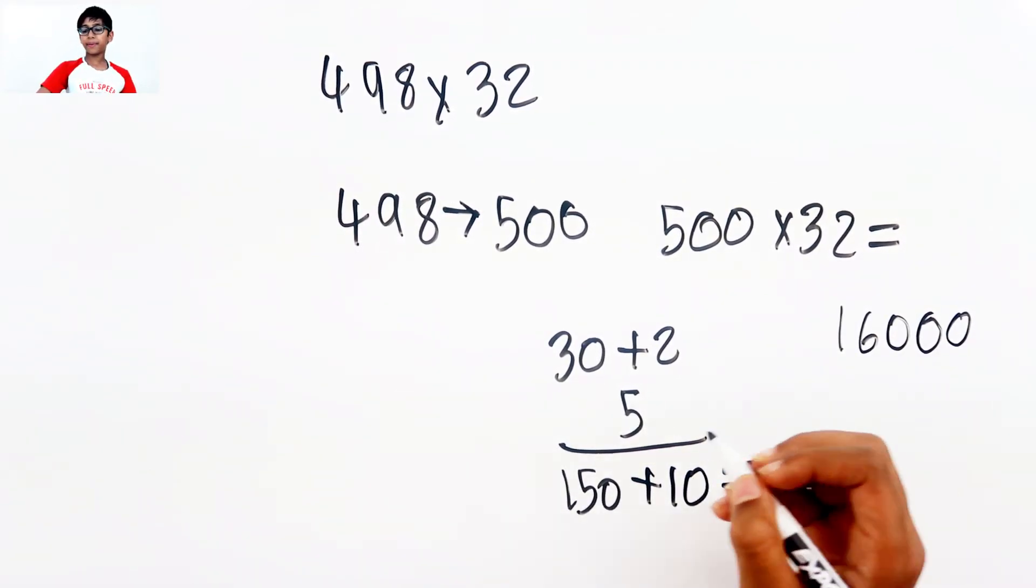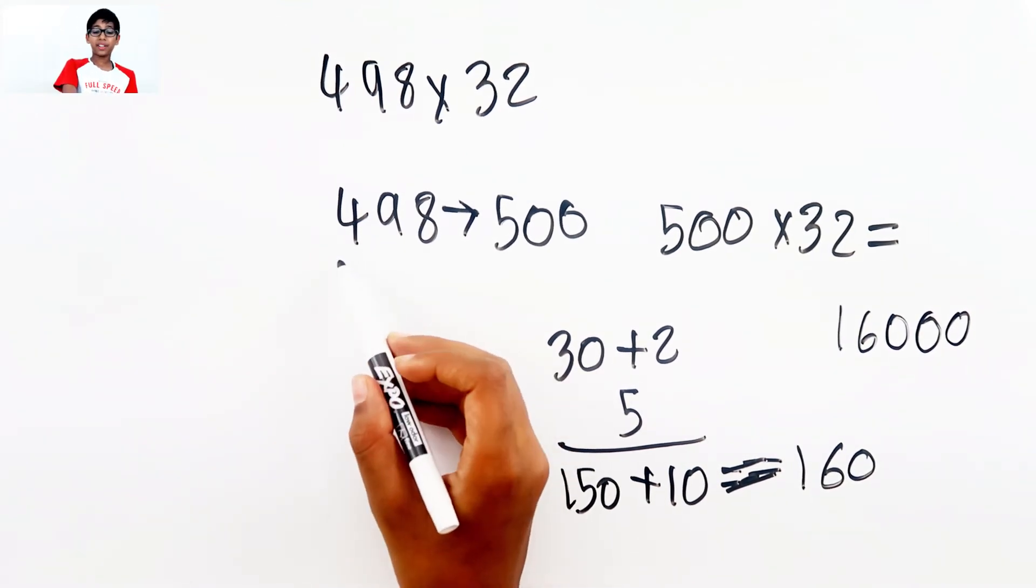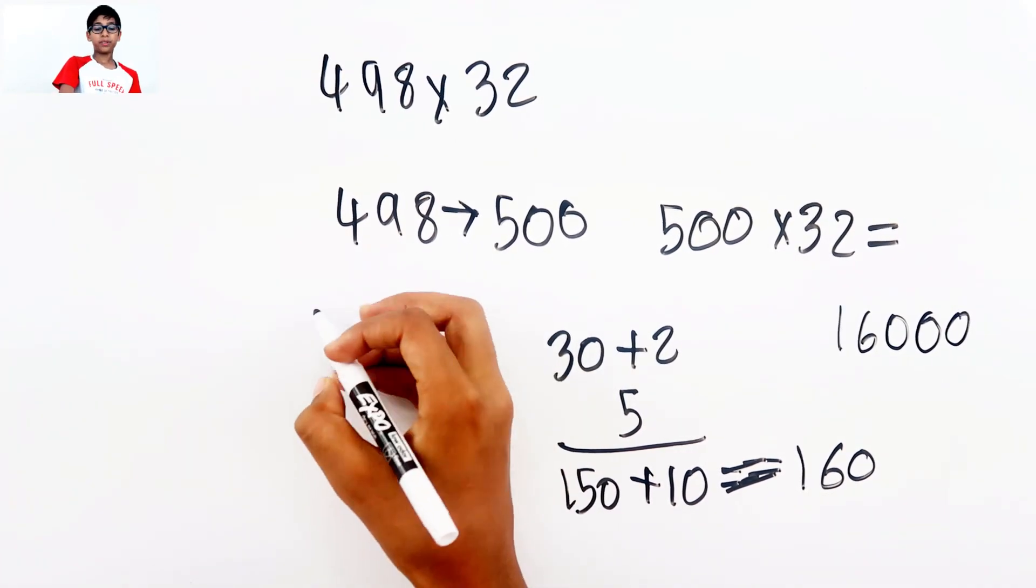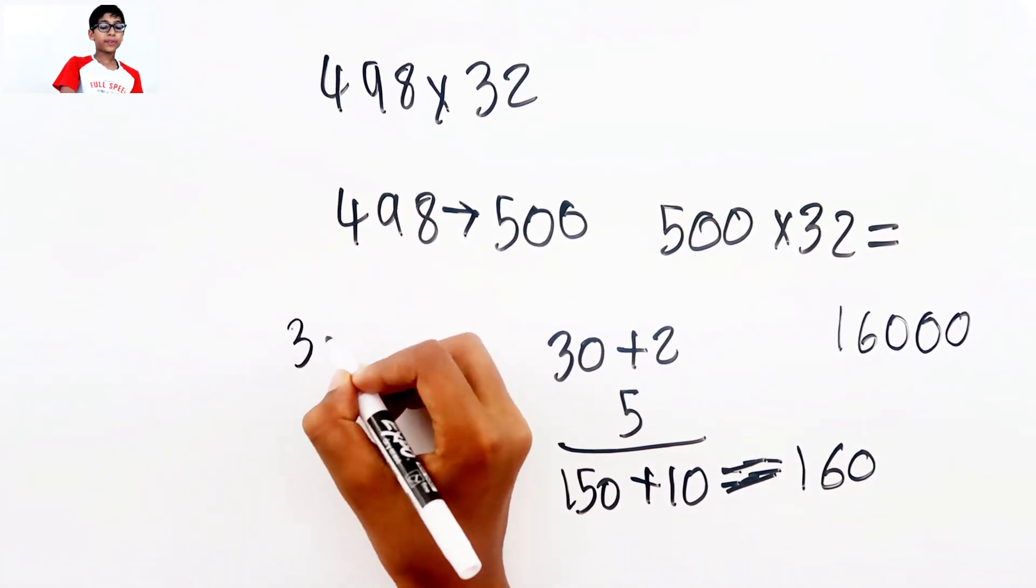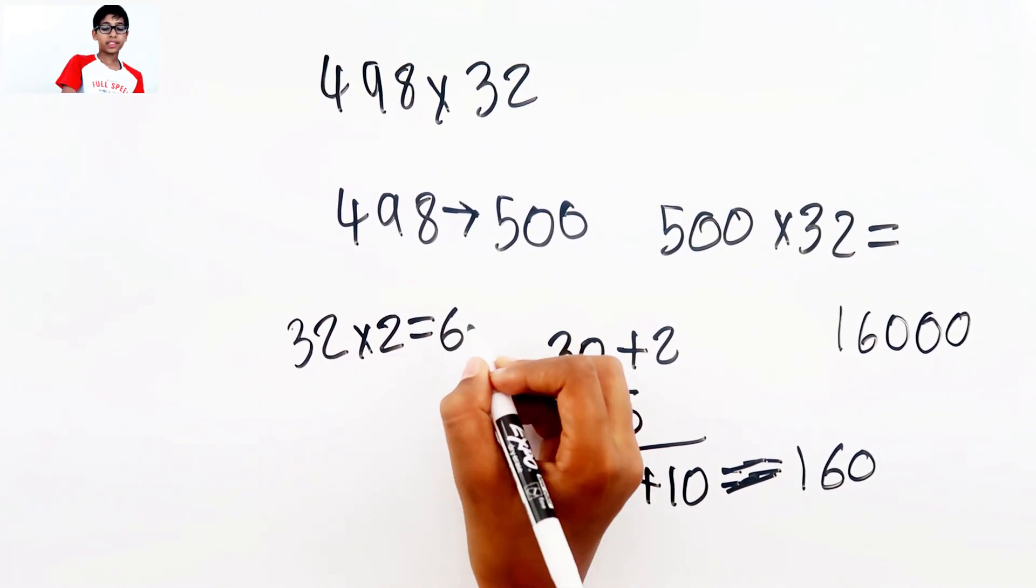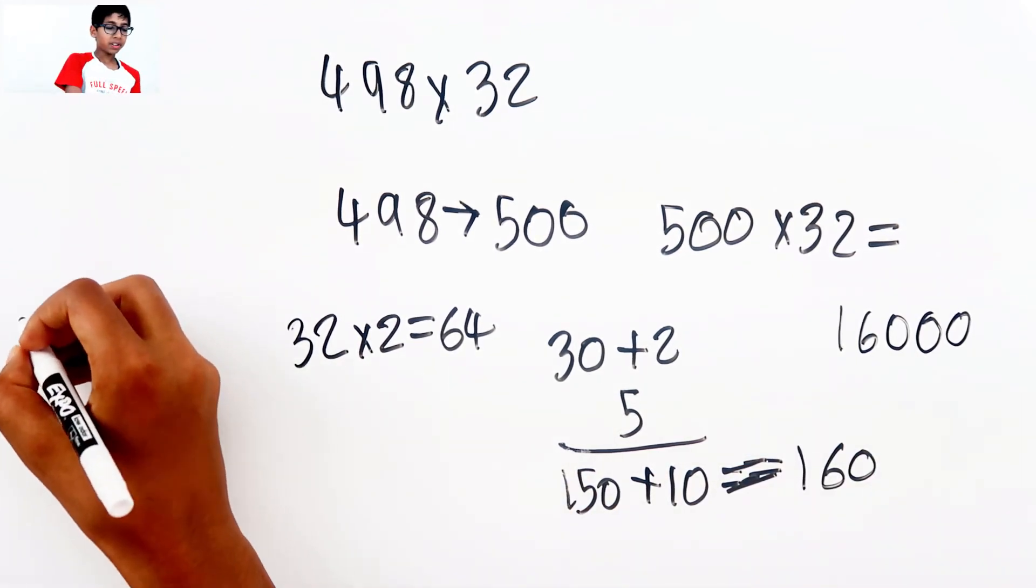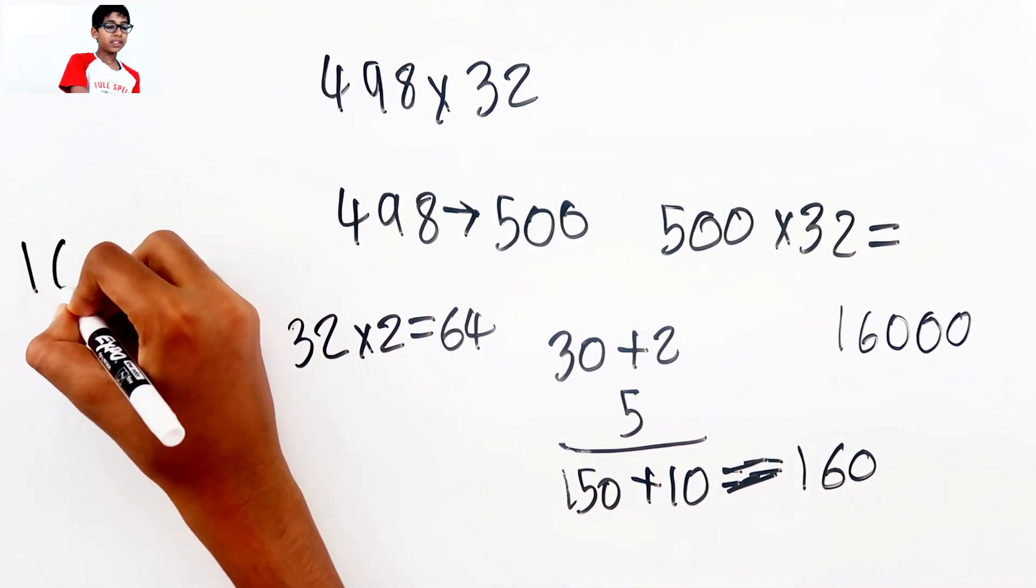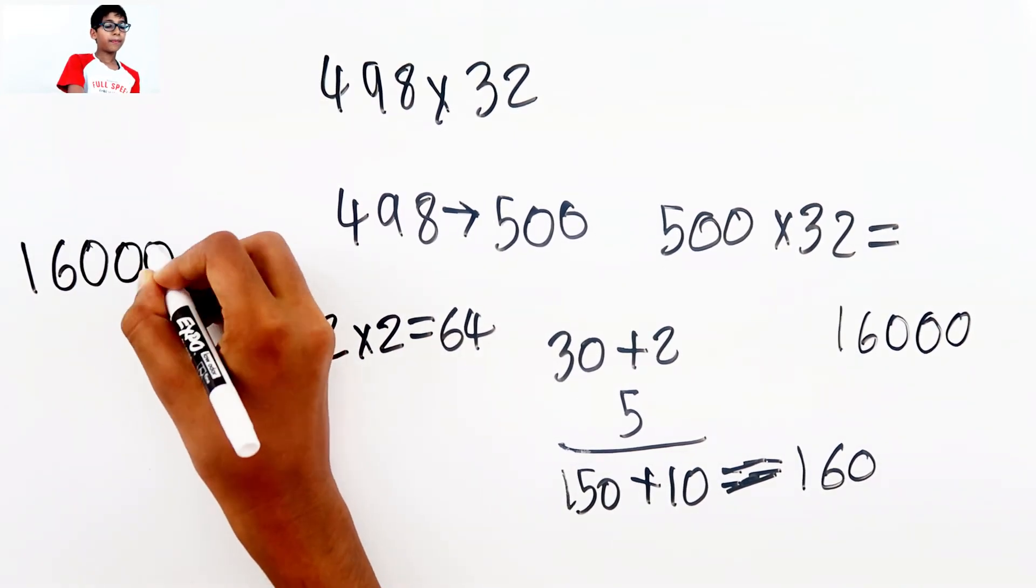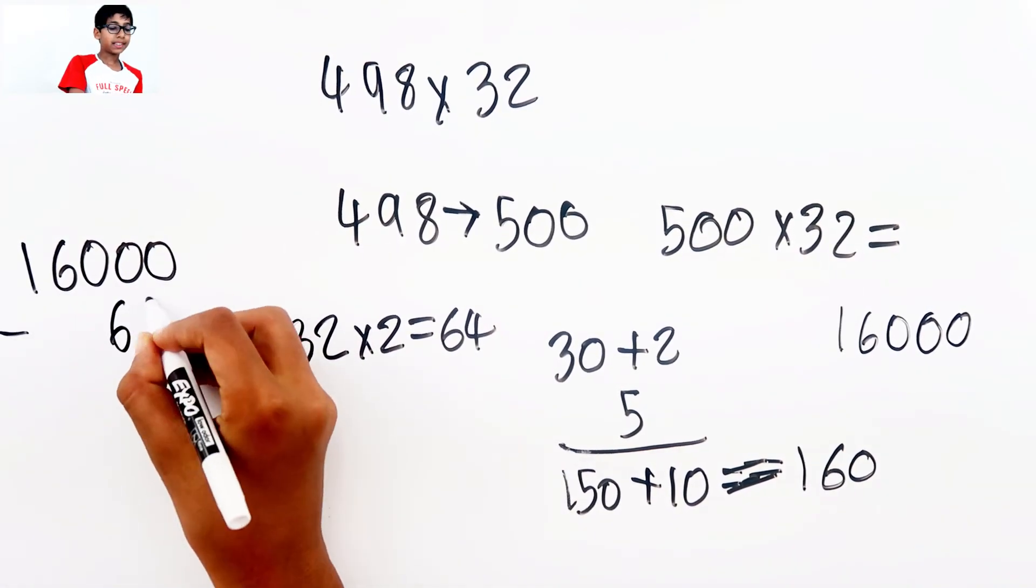And now we need to do, so we did 500. We're supposed to do 498 times 32. So we need to do 32 times 2, which equals 64. Now we need to minus 16,000 minus 64.